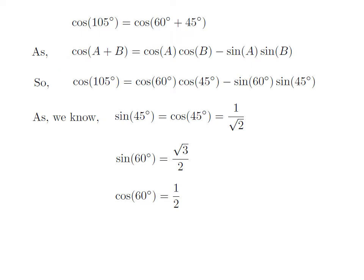As we know, sine of 45 degrees is equal to cosine of 45 degrees, which equals 1 over square root of 2. And sine of 60 degrees is equal to square root of 3 over 2, and cosine of 60 degrees is equal to one half.